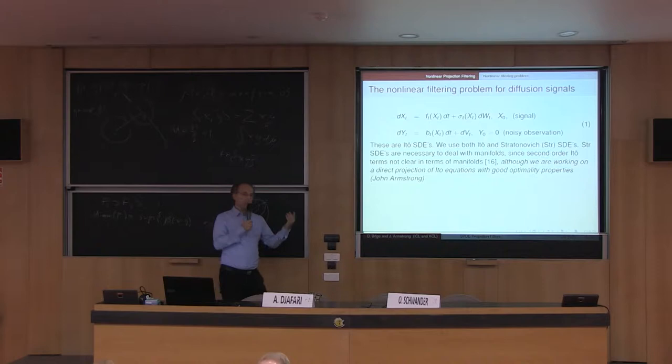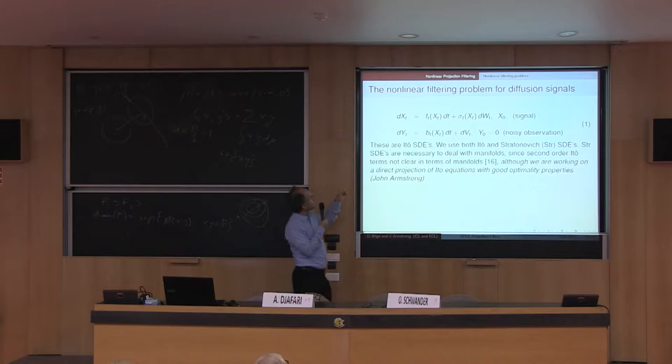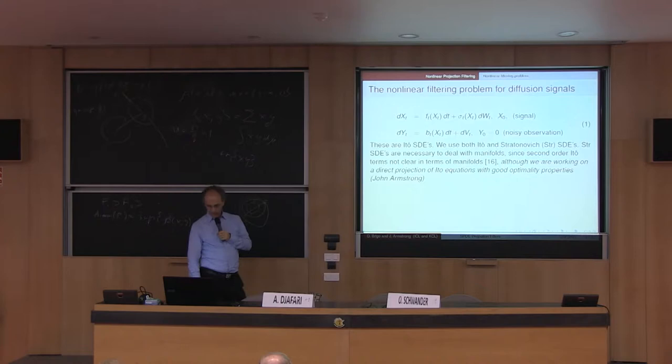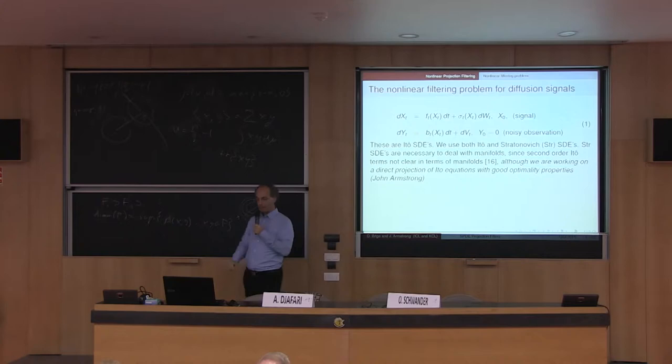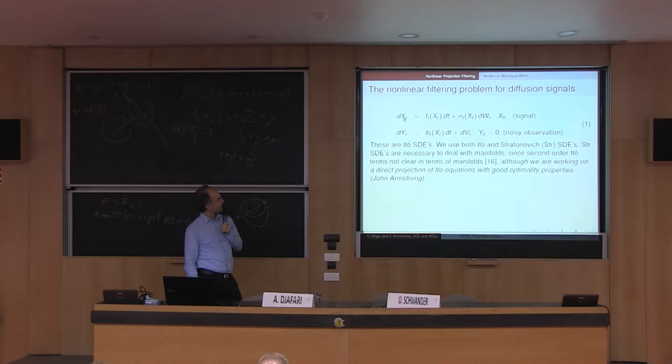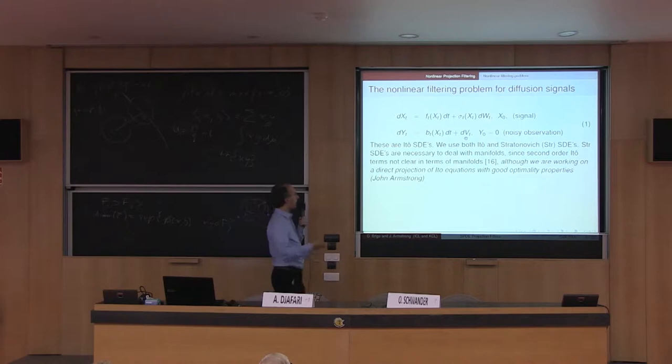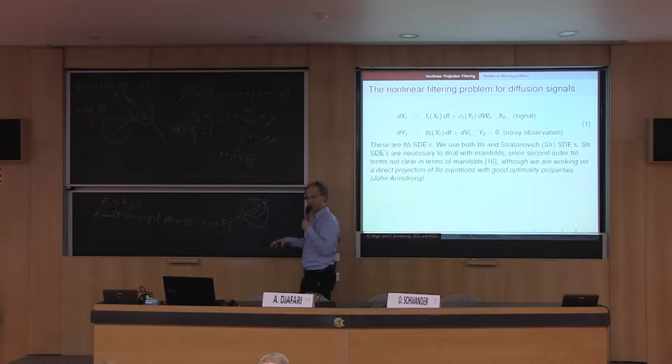In a diffusion setting, you have a stochastic differential equation X for a signal, which has a noise term W — a Brownian motion, which is a mathematical model for white noise. And you have a second stochastic process Y, which you observe. You don't observe X; you see Y, which is a transformation of X through a function B, plus another noise process V, which is another Brownian motion. The problem is to find the best possible estimation of X from the observation of the process Y.